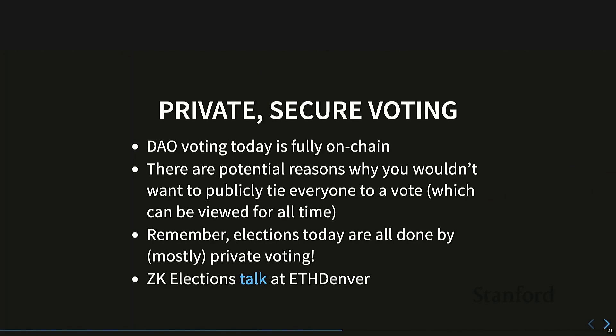Secure voting is another application. This is something that all cryptographers and security researchers love to bash, but I gave a talk at ETH Denver — linked here — if you're curious about my thoughts. Fundamentally, the idea of voting in a national political election is you don't want people to know who you voted for, and you don't want to be able to prove who you voted for, even if you want to. There are a lot of ways to apply zero-knowledge cryptography there to make things more secure.